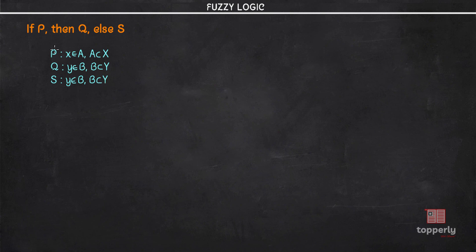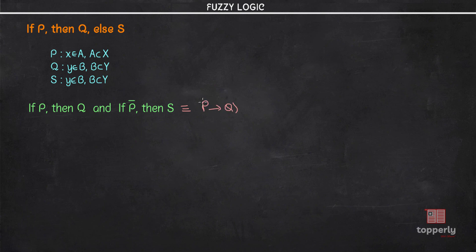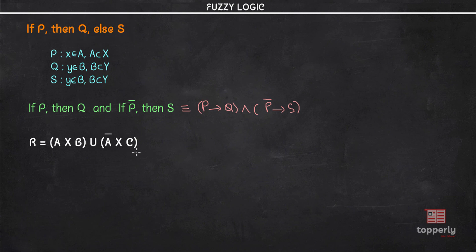The p proposition is defined in universe X and both q and s propositions are defined in universe Y. We can linguistically represent this statement as if p then q, and if not p (that is p negation) then s. If we write this statement in the form of an expression with connectives we get: if p then q can be written as p implies q, conjoined with if p-bar then s written as p-bar implies s. This expression can be represented in set theoretic form by relation R, defined as R equals A cross B union A-bar cross C. Let's take an example to understand how this works.